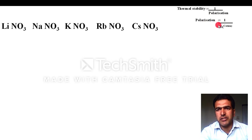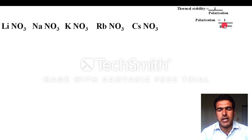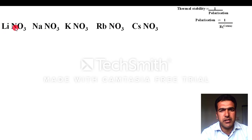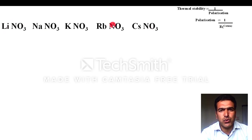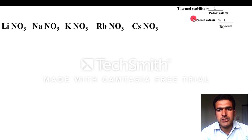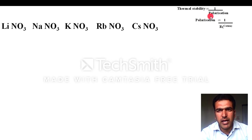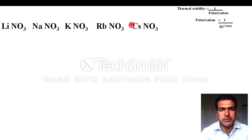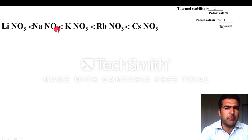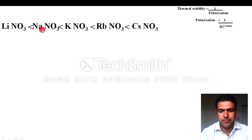Polarization is inversely related to the radius of the cation. As you move from lithium to cesium, the size of the cation goes on increasing, so polarizing power decreases, polarization decreases, and therefore thermal stability increases. The order is: CsNO3 > RbNO3 > KNO3 > NaNO3 > LiNO3.